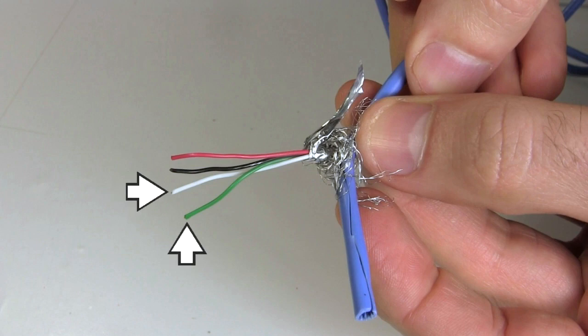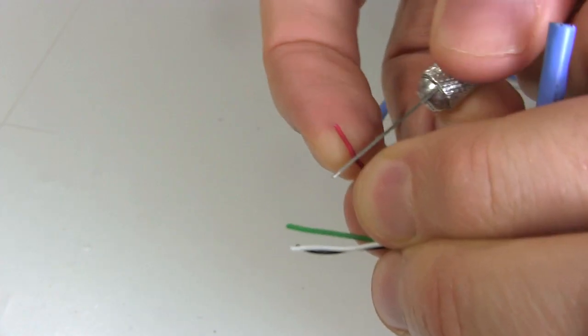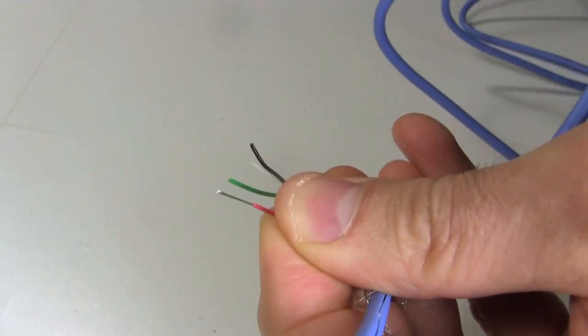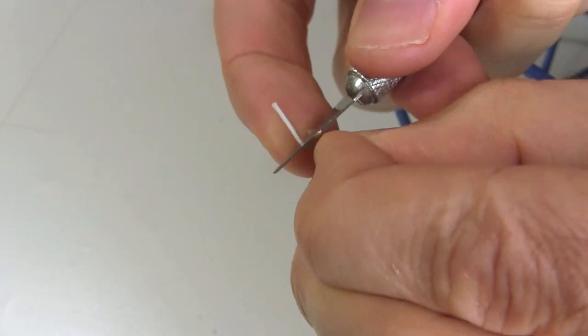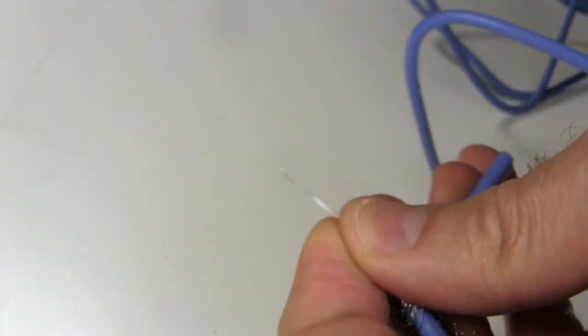The white and green are for data. The black and red are the power ones. We'll be using only the black and red, but I carefully strip some insulation from all of them anyway so I can show you something in a minute. Don't press too hard with the knife or you might cut all the way through.